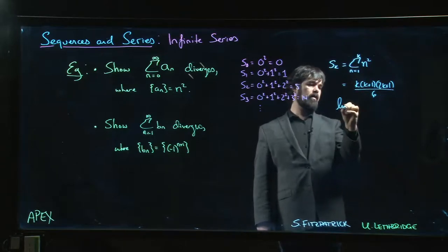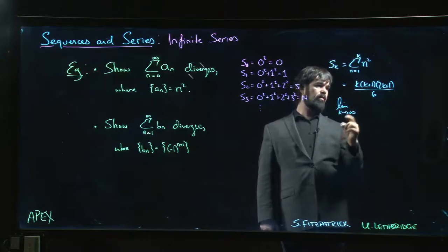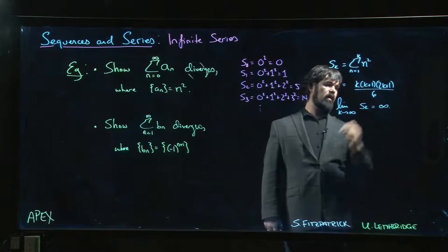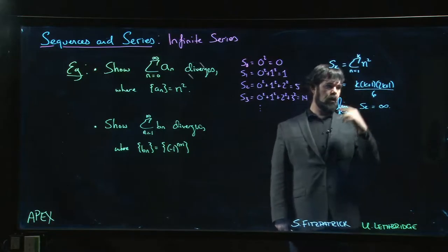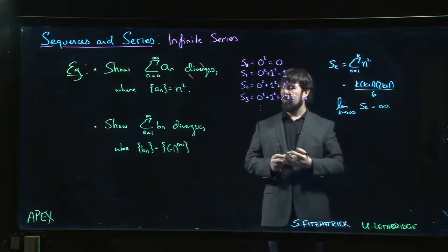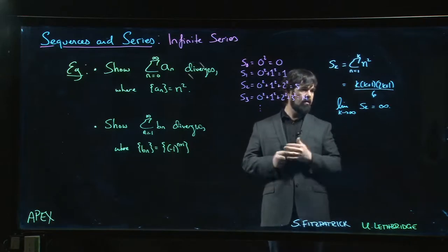that if we take the limit as k goes to infinity of sk, that limit is going to be infinite. This thing grows more or less as k cubed, so certainly the limit doesn't exist. Therefore, the series diverges.